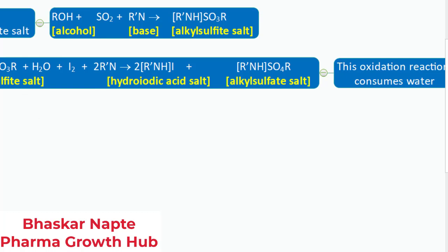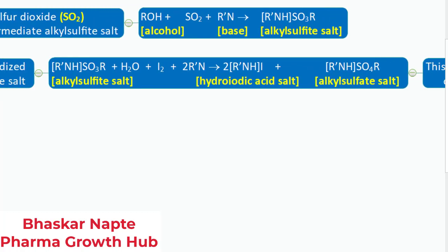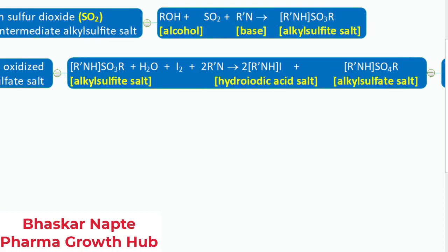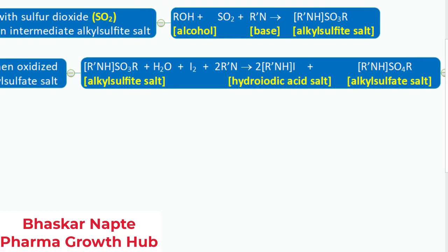For this oxidation of alkyl sulfite salt to happen, you must understand how this alkyl sulfite salt gets formed, and to form the alkyl sulfite salt you need a base and you need the alcohol.